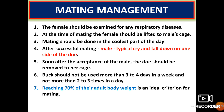For mating management, before putting the female into the male's cage, the female should be examined for any respiratory diseases. At the time of mating, the female should be taken to the male's cage. Mating should be done in the coolest part of the day. After successful mating, the male will give a typical cry and fall to one side of the doe. The doe should be removed to her cage soon after accepting the male. The buck should not be used for more than 3 to 4 days per week and not more than 2 to 3 times per day.